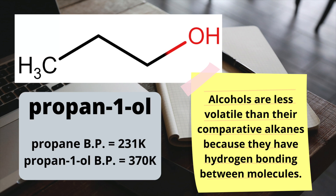For example, it requires a lot more energy to boil propan-1-ol than propane, since the intermolecular bonds are stronger. Therefore, propan-1-ol has a much higher boiling point.